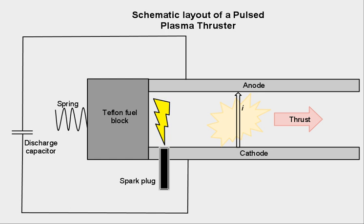Pulsed plasma thrusters are also an avenue of research used by universities for starting experiments with electric propulsion, due to the relative simplicity and lower costs involved with PPTs as opposed to other forms of electric propulsion such as Hall effect ion thrusters.